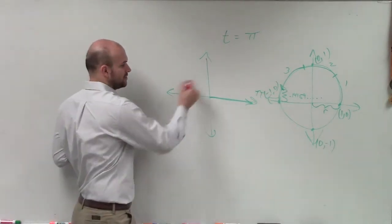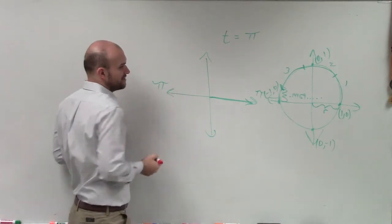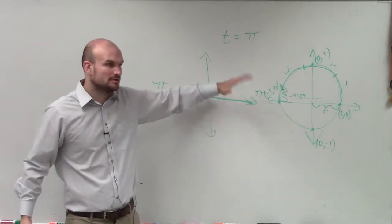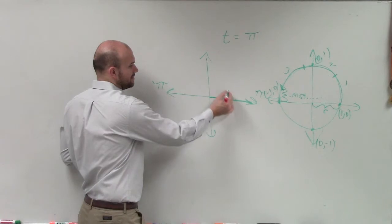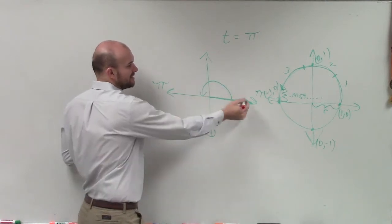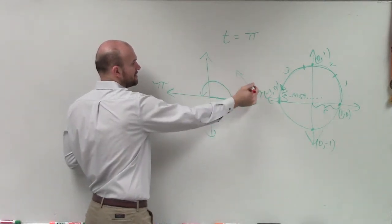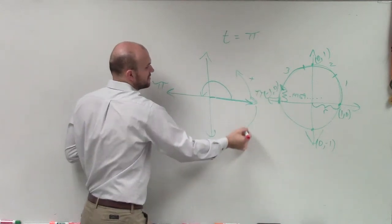So halfway around a circle is pi radians. Therefore, if I need to rotate an angle to pi, my angle is going to have an initial side here and a terminal side here. Because remember, when you go in the counterclockwise direction, that's positive and that's negative.